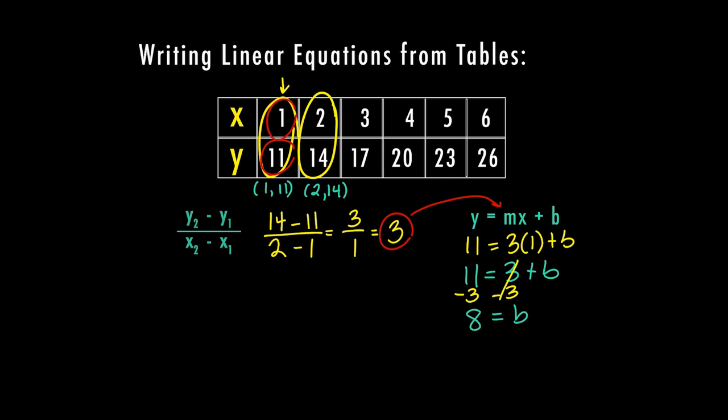Now I can plug it into my original equation. So I now have y equals 3x plus 8. And in order for this to be the correct solution, I can take any number from this table, plug it in for the x, that's my input, and my answer will be the y, my output.